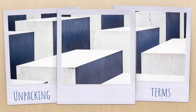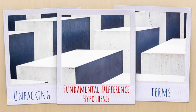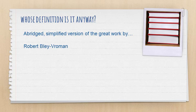Hello and welcome to Unpacking Terms. Today we're going to unpack the Fundamental Difference Hypothesis, or FDH. This hypothesis was proposed by Robert Blay Broman, so today it is mostly about him. I will be quoting other scholars, but he was the one who proposed it.